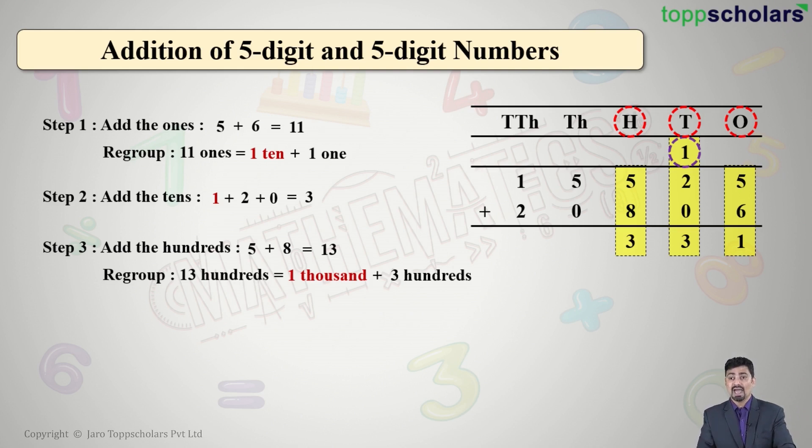In the thousands, we have 1 which was carried forward, and then 5 + 0. What is 1 + 5 + 0? The answer is 6. Let us write 6 in the thousands place.